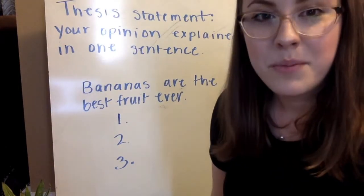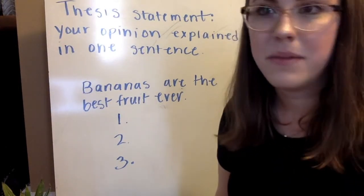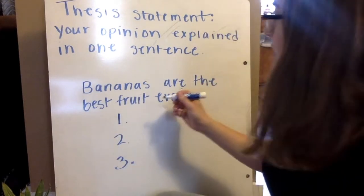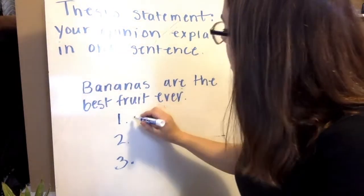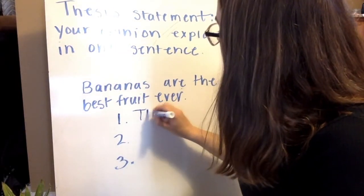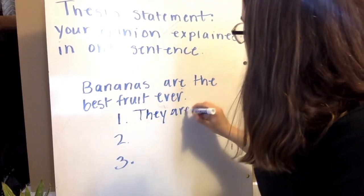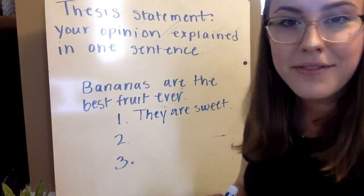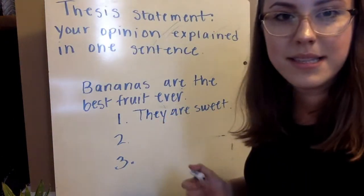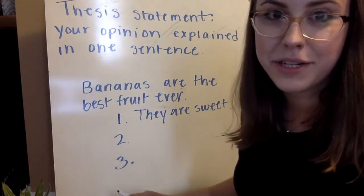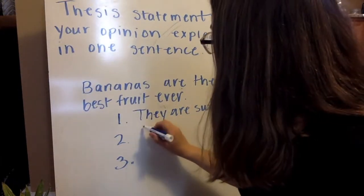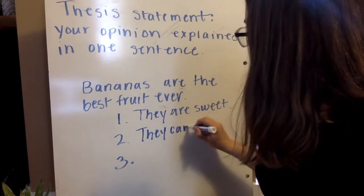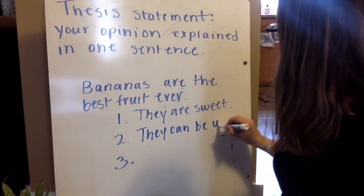If you're really struggling to come up with three reasons, maybe you need to change your thesis statement a little bit. If you can't come up with three, it's going to be kind of difficult to write. So let's see. Bananas are the best fruit ever because they're sweet. Like I said, this is just a draft. So it doesn't need to be perfect. And they can just be short sentences like this. You don't want to write a whole paragraph for your outline. So they're sweet. They can be used for bread.